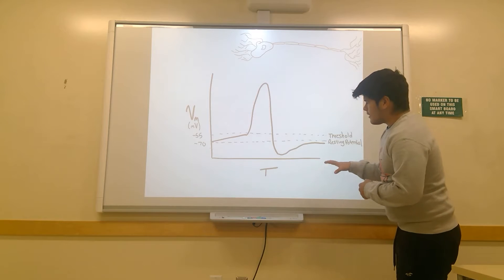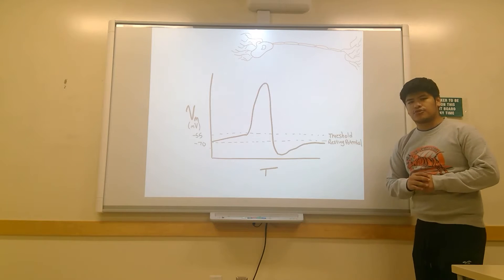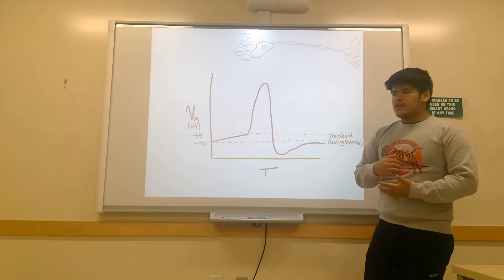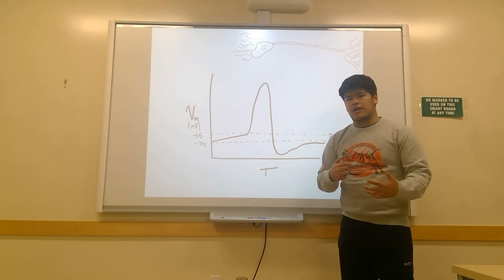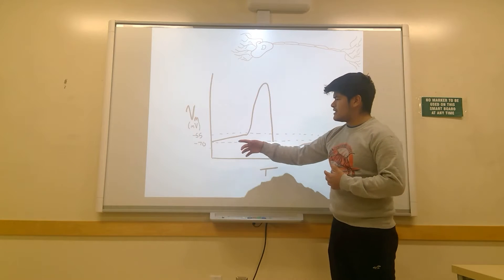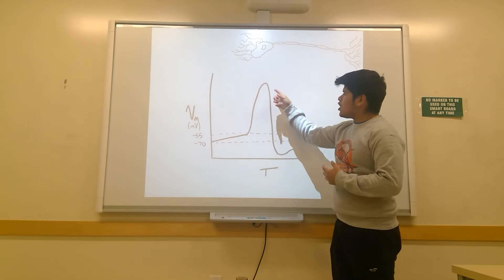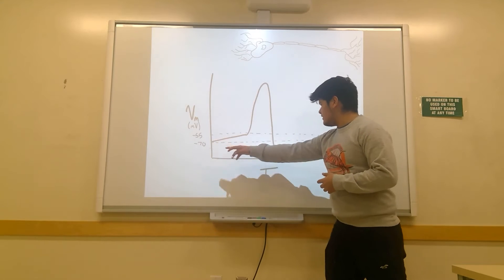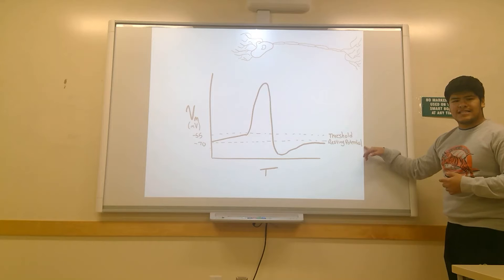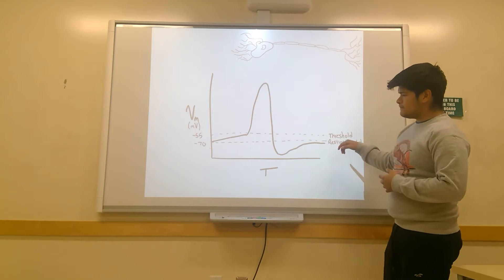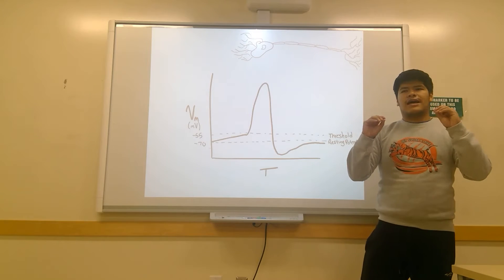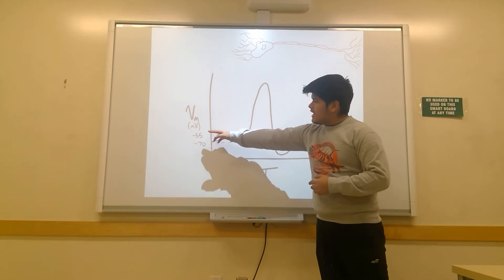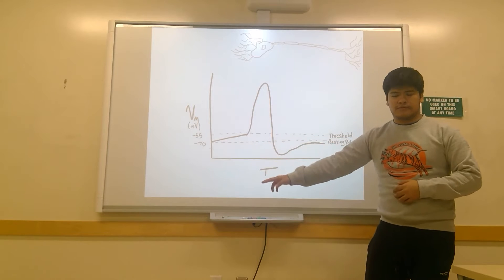This right here is a membrane potential graph. When an action potential is fired, you see that a lot of things happen in a neuron. This is represented by the charges and how they change within the neuron. At the resting state, which is also known as the resting potential of a neuron, there is no action potential being fired, no stimuli. That is found to be at around negative 70 millivolts.